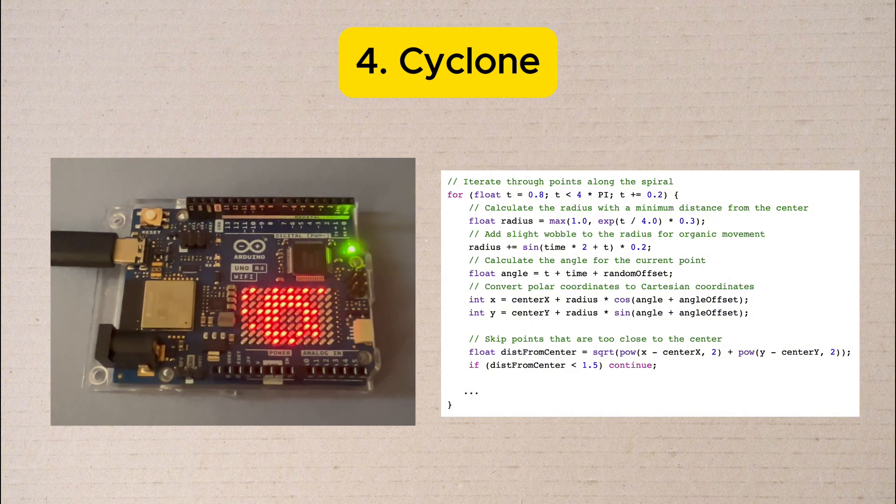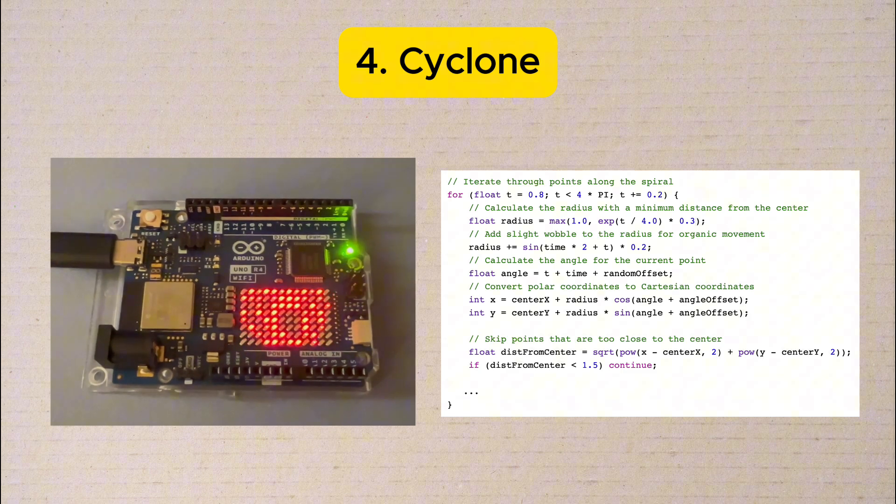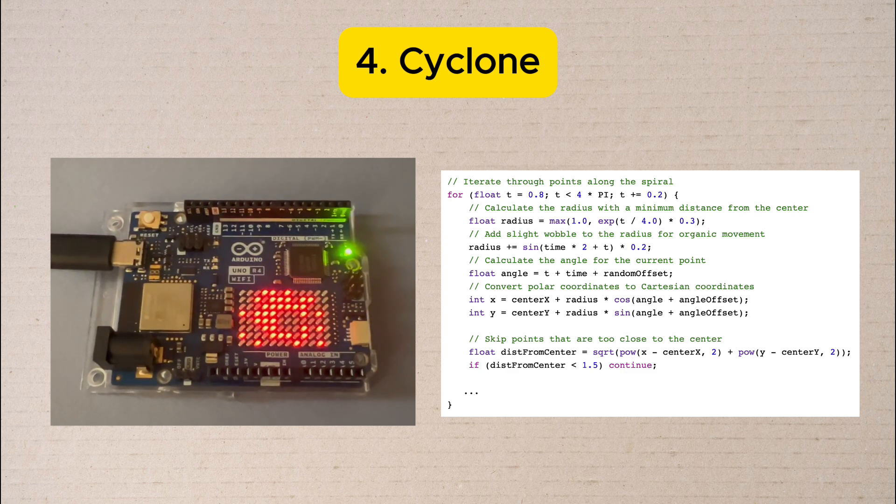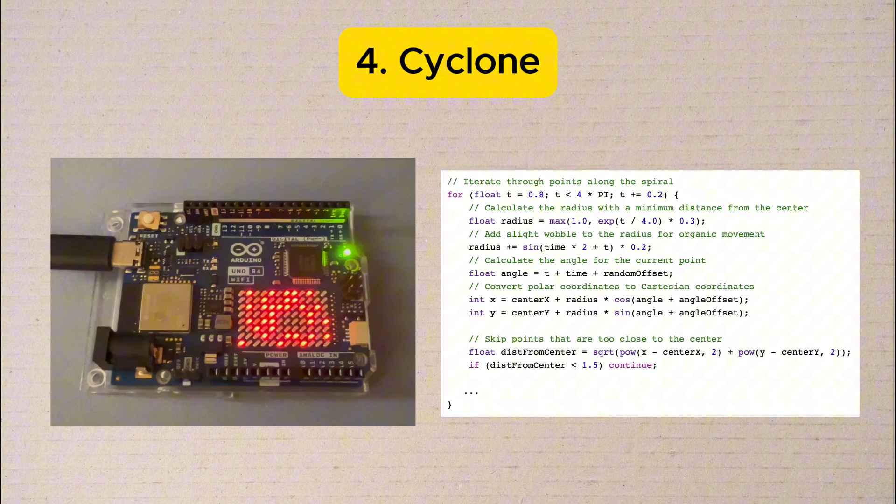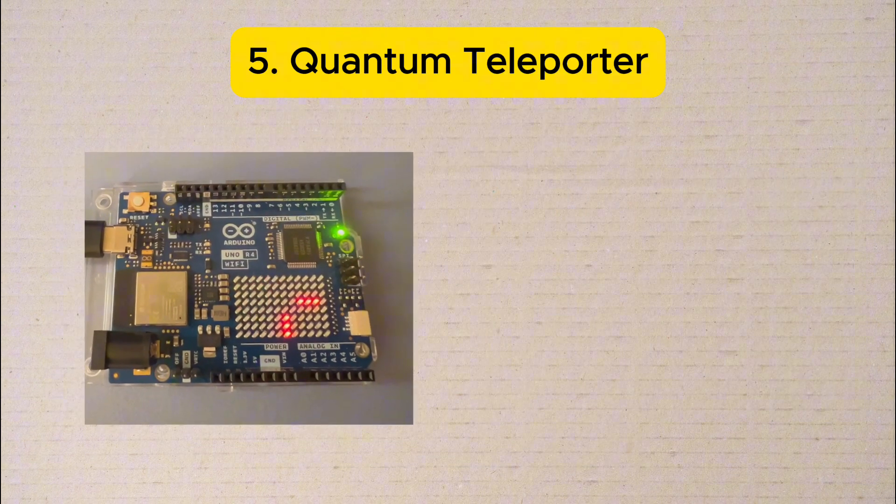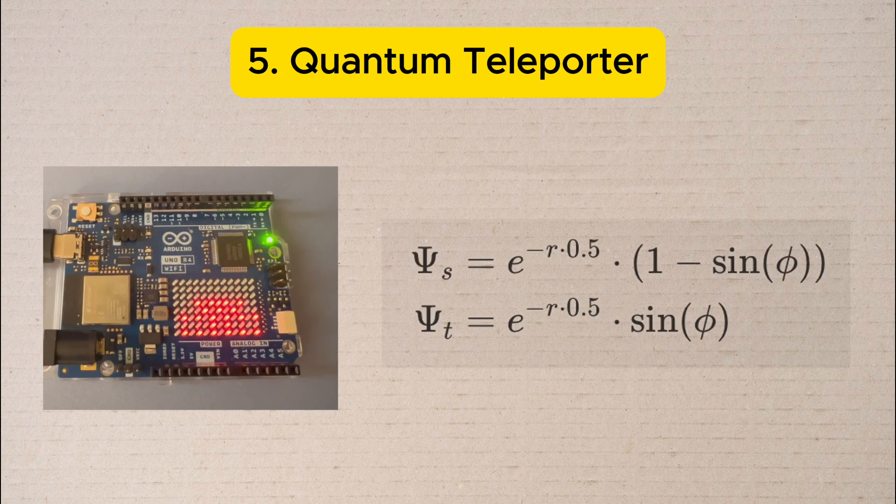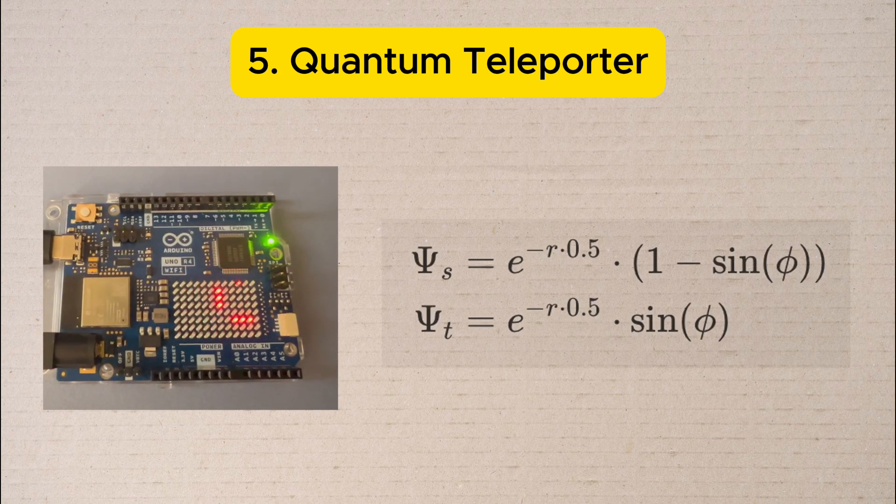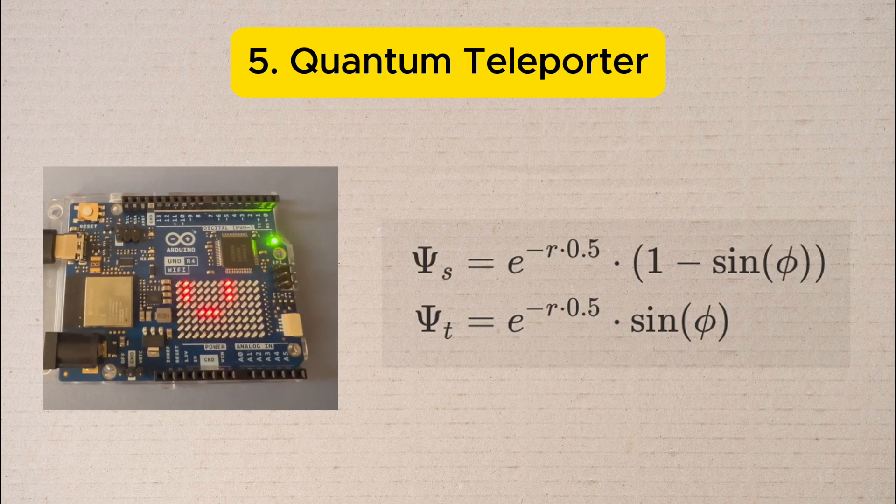The frame is updated every 50 milliseconds to create a natural looking cyclone with turbulence. Finally, we visualize quantum teleportation. We start with a quantum state appearing as a glowing point which then creates an entangled connection with another location.